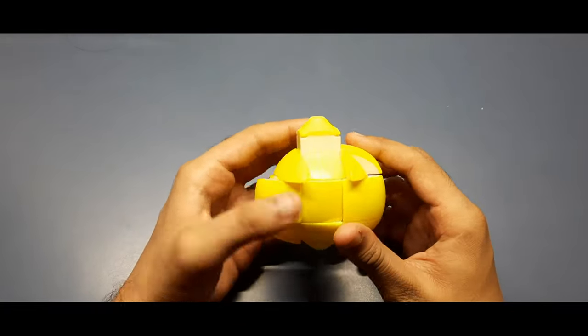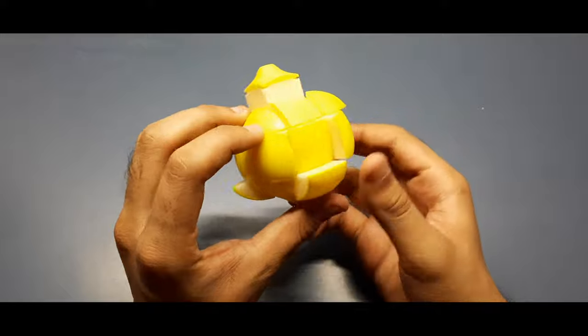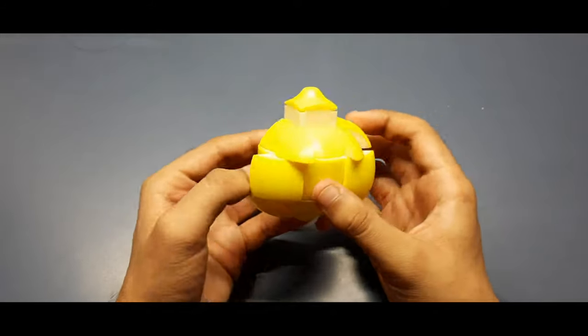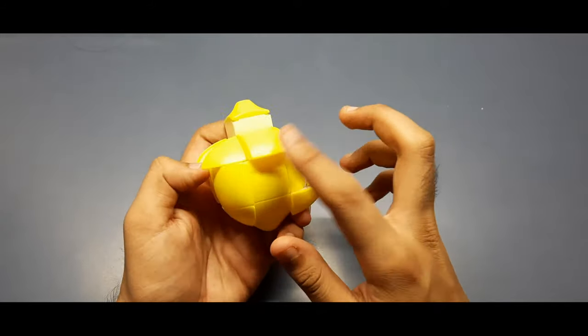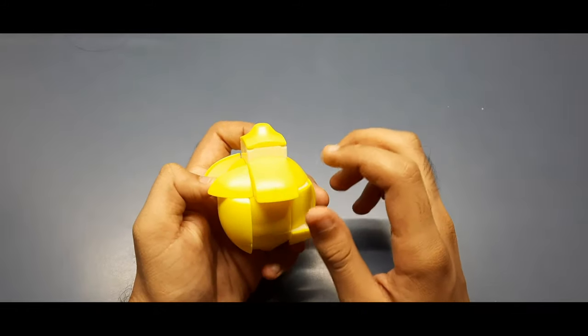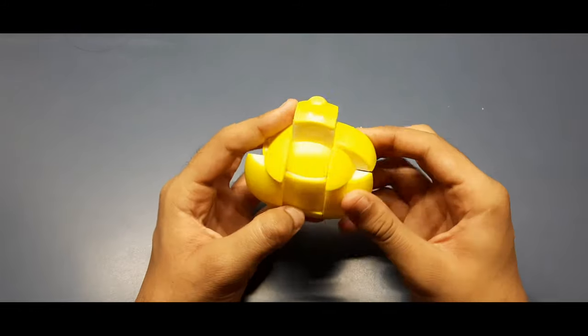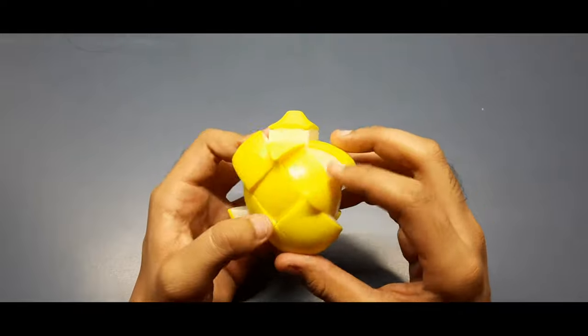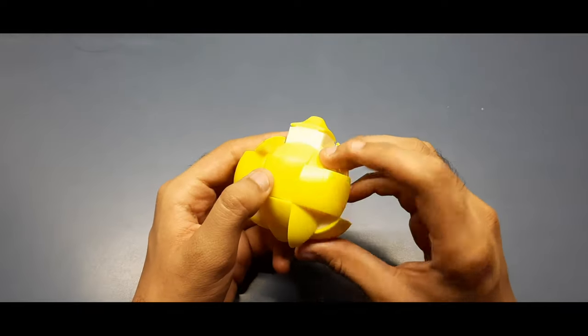So first we have to make plus, and one thing to keep in mind is the centers are different. So we have to pair according to the middle piece. So yeah, let's start with the first one. So we have to just see that it's not matching here.